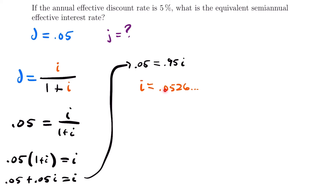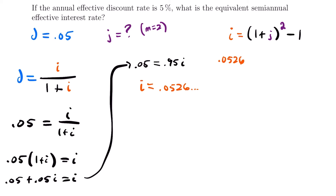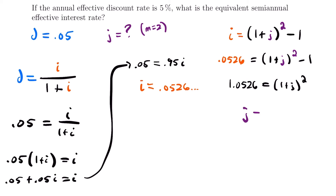This is the equivalent annual effective interest rate to our effective annual discount rate. Now we can convert this rate to a semi-annual rate J using the formula I equals (1 plus J) to the power of 2, minus 1, since J is semi-annual and M equals 2. Plugging in I = 0.0526 — save this value to avoid rounding errors — we get 1.0526 equals (1 plus J) squared. Taking the square root and subtracting 1, J equals 0.02598, which is our final answer.